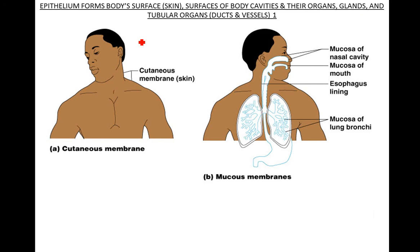Tubular organs like ducts and vessels — like the duct on an exocrine gland or a capillary. You'll notice we have something called cutaneous, we've got mucosa, and then the next slide gives you something called serous. There are three distinct types of membranes. A cutaneous membrane — think about your skin. What I'm writing here are the three types of membranes, and we're also adding in a function of epithelia.